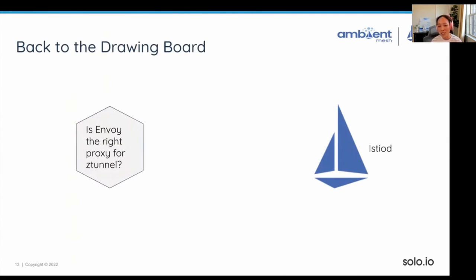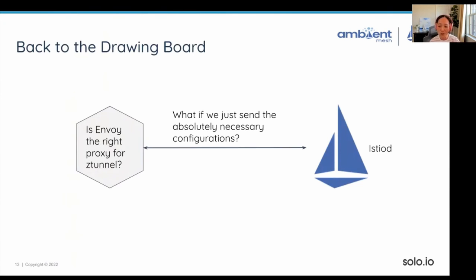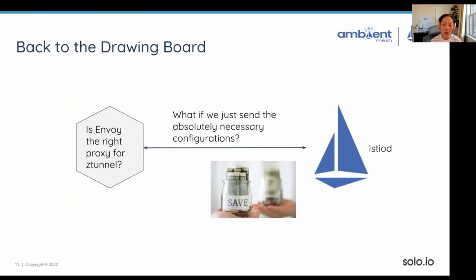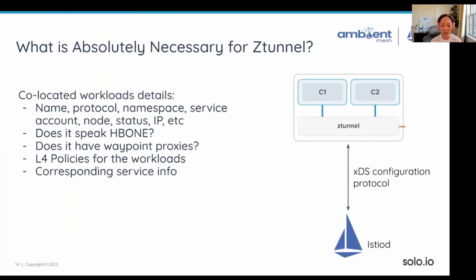That led the community to go back to the drawing board: is Envoy the right implementation for ZTunnel? What if we just sent the absolutely necessary configuration to ZTunnel without rendering it in Envoy format? That would allow us to save costs, since many users pay for network traffic between data plane and control plane, and also save memory and CPU by sending far less data. So we started thinking about what is absolutely necessary for the Zero Trust Tunnel.